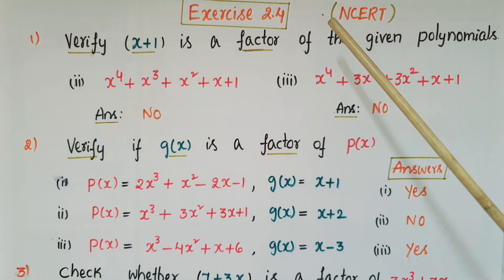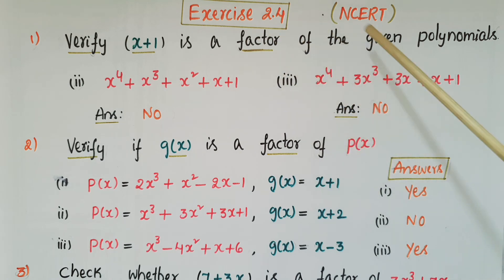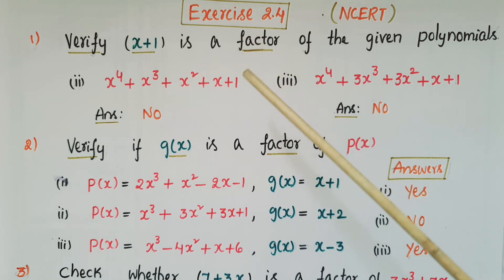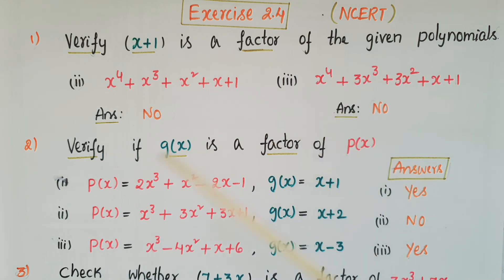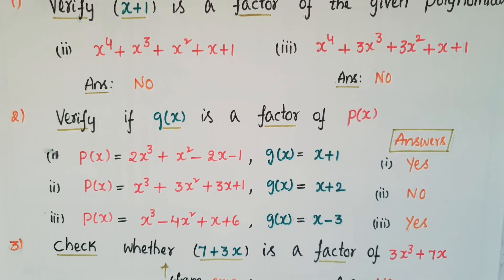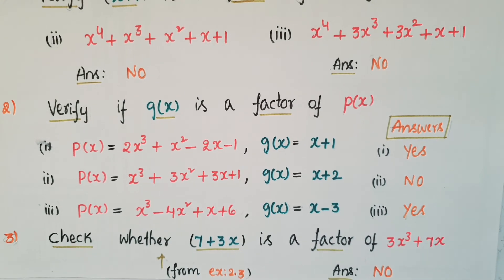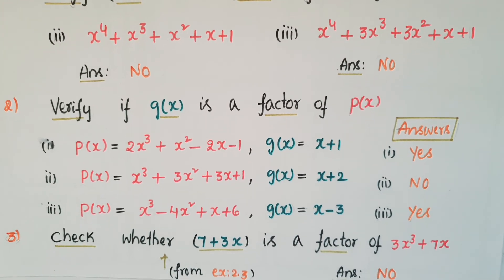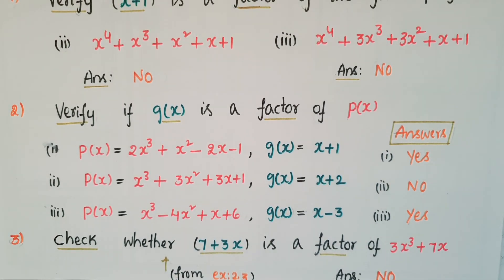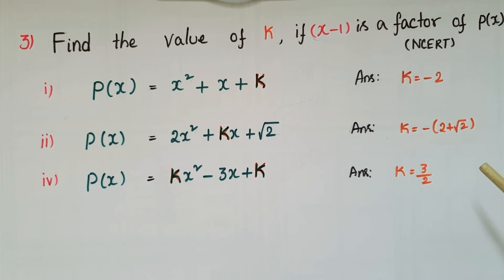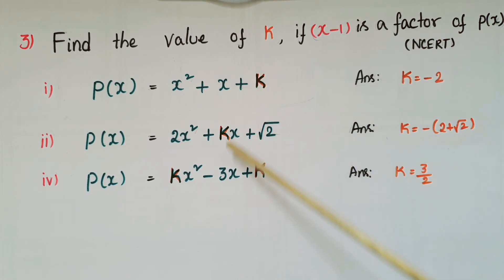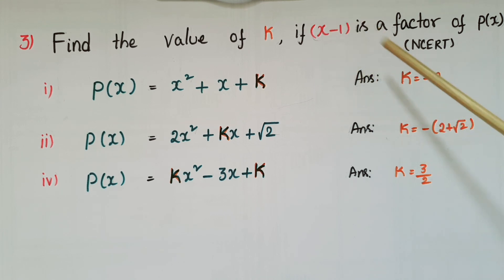Please do these practice problems. This is from Exercise 2.4 of NCERT. The first one asks you to verify x plus 1 is a factor of the given polynomials — I have already solved problems one and four in the video, so please check those answers. The second one asks you to verify if g(x) is a factor of p(x). The third problem from Exercise 2.3 asks to check whether 7 plus 3x is a factor of 3x³ + 7x using the Factor Theorem — the answer is no. The third problem from Exercise 2.4 asks you to find the value of k if x minus 1 is a factor of p(x); the answers are provided.